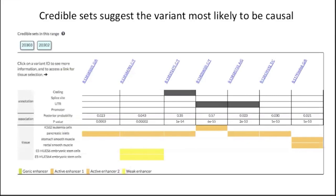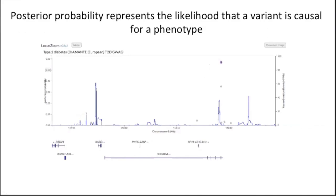The credible sets tab of the gene page: credible sets are sets of variants predicted to contain a causal variant for a particular phenotype, and they're really useful to zero in on the variant most likely to be causal. For type 2 diabetes, we have credible sets created in Mark McCarthy's group at Oxford — really well-curated credible sets. LocusZoom also has a module that will calculate credible sets, so for any other phenotype you can see calculated credible sets on this tab. The top of the credible sets tab is a table showing each variant in the set, indicating whether they overlap with coding sequences, splice sites, UTRs, their posterior probability, and p-value. Below that table is another LocusZoom plot where the vertical axis is posterior probability rather than p-value, so you can easily see which variant stands out as most likely to be causal.